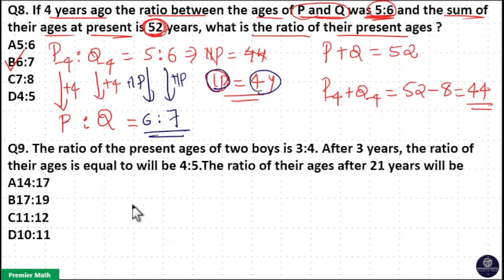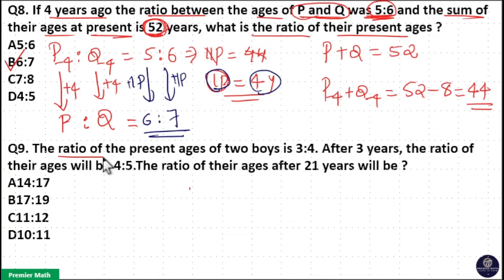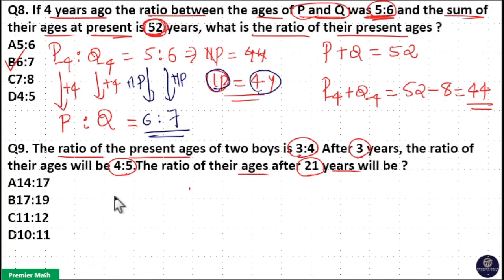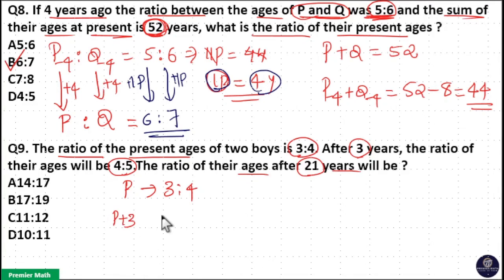Option B is your answer. Next: the ratio of present ages of 2 boys is 3 is to 4. After 3 years, the ratio of their ages will be 4 is to 5. What will be the ratio of their ages after 21 years? Here the present age ratio of 2 boys is 3 is to 4, and after 3 years the ratio becomes 4 is to 5.